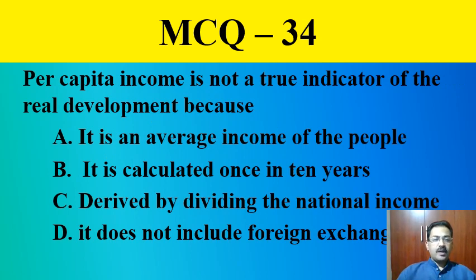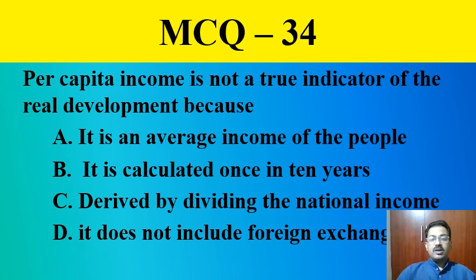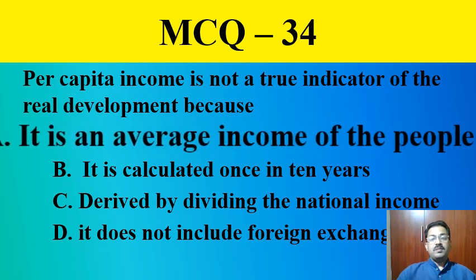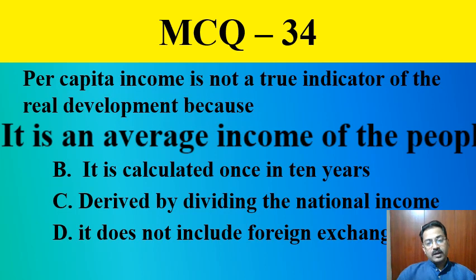MCQ question number thirty-four: Per capita income is not a true indicator of real development because — A. it is an average income of the people, B. it is calculated once in 10 years, C. derived by dividing national income, D. it does not include foreign exchange. The correct answer is it is an average income of the people. Per capita income does not show development in health, education, or other facilities — it is just the average income of the people.